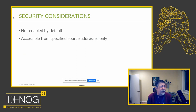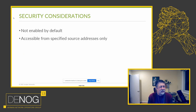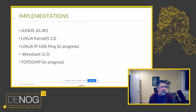Some security considerations: this should not be enabled by default, because it does give someone looking to gather information about your network a way to discover interface names, and from those you might be able to guess the OS, interface speed, and so on. It should also be accessible from specified source addresses only — for instance, if a node receives an extended echo request, it should probably only respond if that request comes from the NOC or some trusted source. Implementations exist in Junos 23R1, Linux kernel 5.13, Linux IP utils ping (commit in progress), Wireshark 3.5, and TCP dump (in progress).